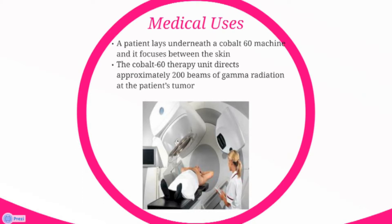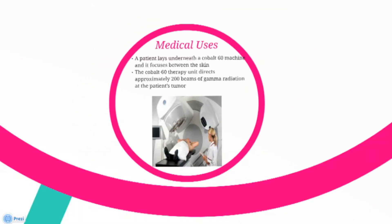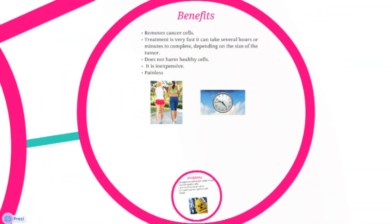It is used when a patient lies underneath a Cobalt-60 machine. The focus between the skin and the machine is usually 80cm. The Cobalt-60 therapy unit directs approximately 200 beams of gamma radiation at the patient's tumour.